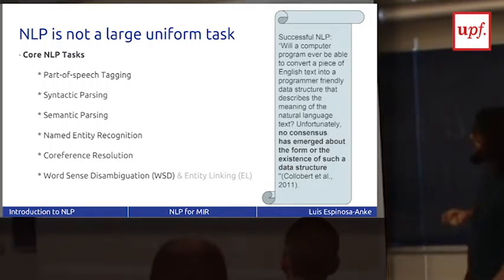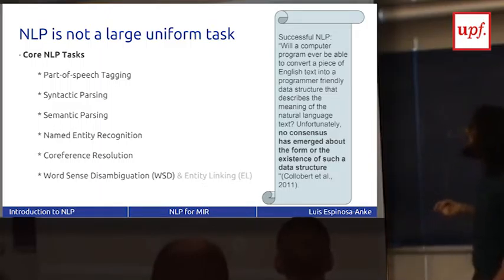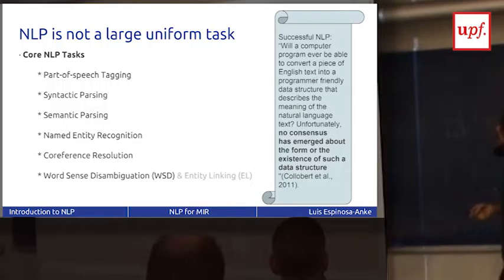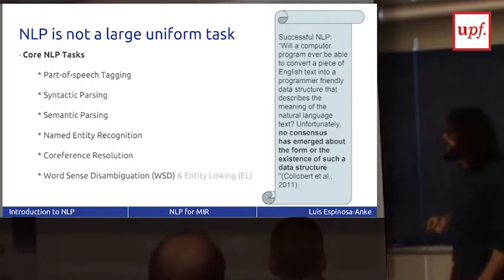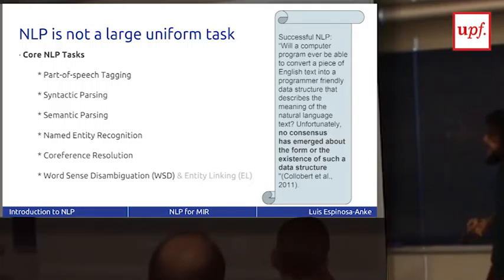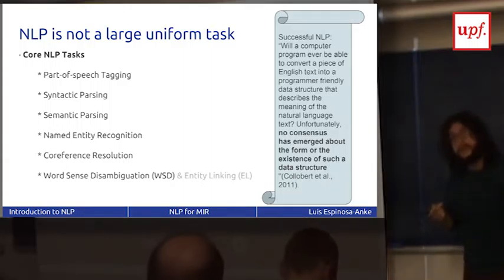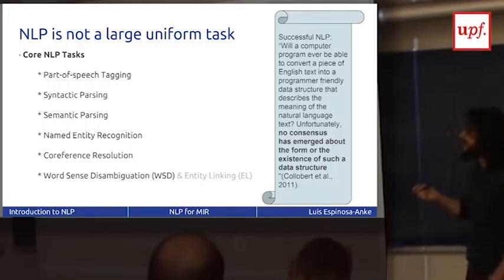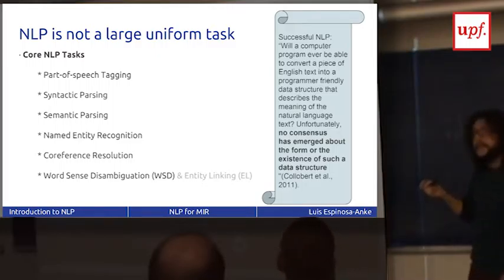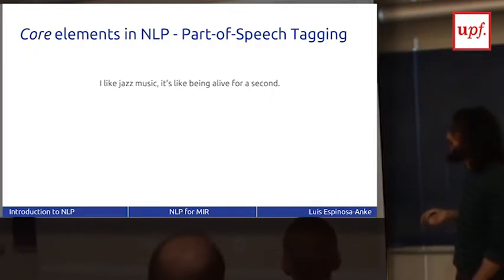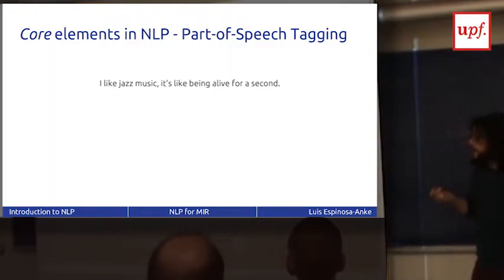A quote from Collobert and colleagues from 2011 captures the reality today: 'Will a computer program ever be able to convert a piece of English text into a programmer-friendly data structure that describes the meaning of the natural language text? Unfortunately, no consensus has emerged about the form or even the existence of such a data structure.' So if we don't even agree whether such a structure should exist, it makes sense to continue breaking down language into smaller parts. These are what we call core NLP tasks.